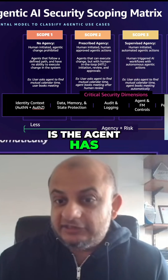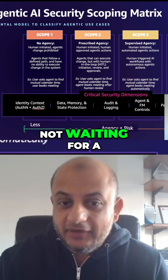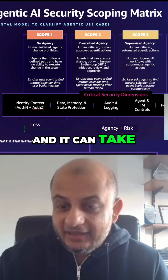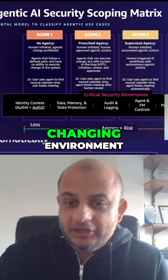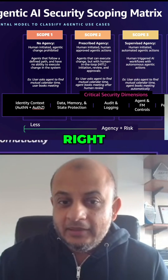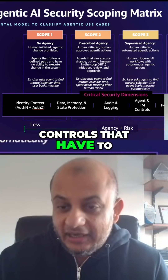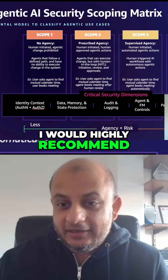Scope four is where the agent has full permissions — it's not waiting for a human to do anything and it can take actions based on the changing environment. So what are the security controls that have to be in place? I would highly recommend reading this framework.